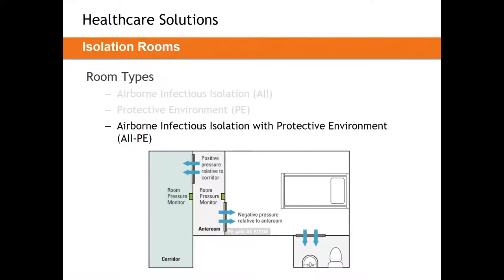The third type is the combination: airborne infectious isolation with a protective environment. This is the same as an AII room, but with a positive anteroom connected to it. The patient space is negatively pressurized, while the anteroom is positively pressurized and acts as a barrier between the corridor and the AII room, ensuring only clean, fresh, filtered air infiltrates into the isolation space.